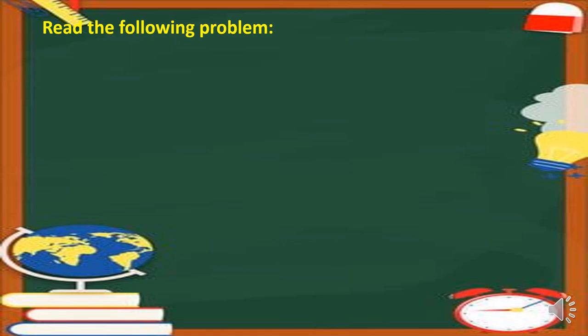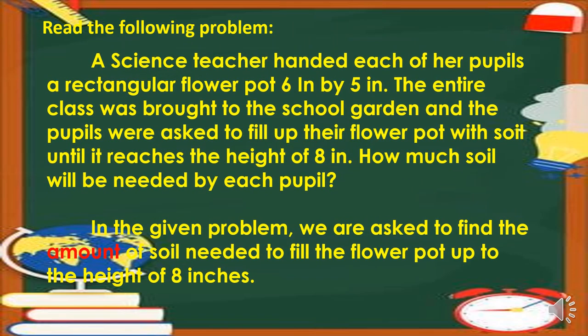Let us now read the following problem. A science teacher handed each of her pupils a rectangular flower pot 6 inches by 5 inches. The entire class was brought to the school garden, and the pupils were asked to fill up their flower pot with soil until it reaches the height of 8 inches. How much soil will be needed by each pupil? In the given problem, we are asked to find the amount of soil needed to fill the flower pot up to the height of 8 inches.